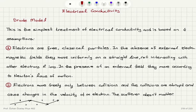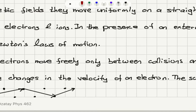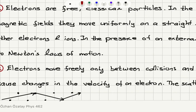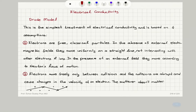These assumptions are very similar to the assumptions of an ideal gas. Electrons are free classical particles. In the absence of external electromagnetic fields, they move uniformly on a straight line, not interacting with other electrons and ions. When an electron emerges from a collision, until the next collision, it moves on a straight line with no interactions with the surrounding ions or electrons.